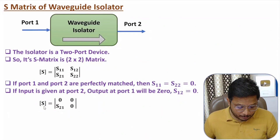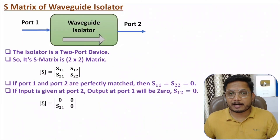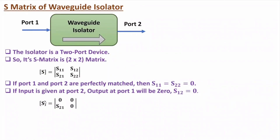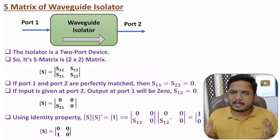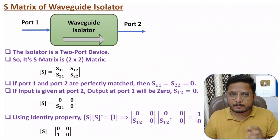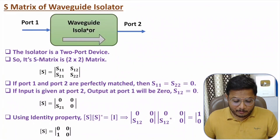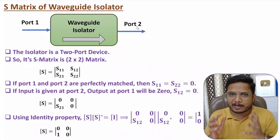Now applying the identity property of scattering parameters: the scattering matrix multiplied by its conjugate equals the identity matrix. From this, S21 is found to be equal to unity. So the S-matrix of the waveguide isolator is [0, 0; 1, 0], where S21 equals unity and all other coefficients are zero. That is the basic S-matrix of waveguide isolator, in which signal flows only from port one to port two, with port one and port two perfectly matched so return loss at both ports is zero.